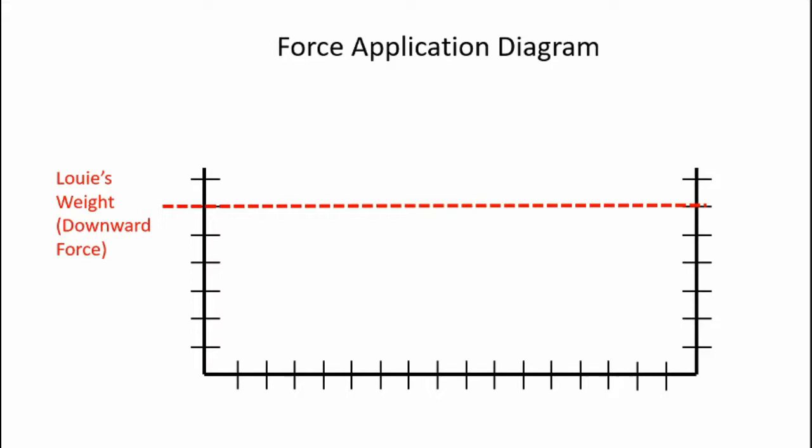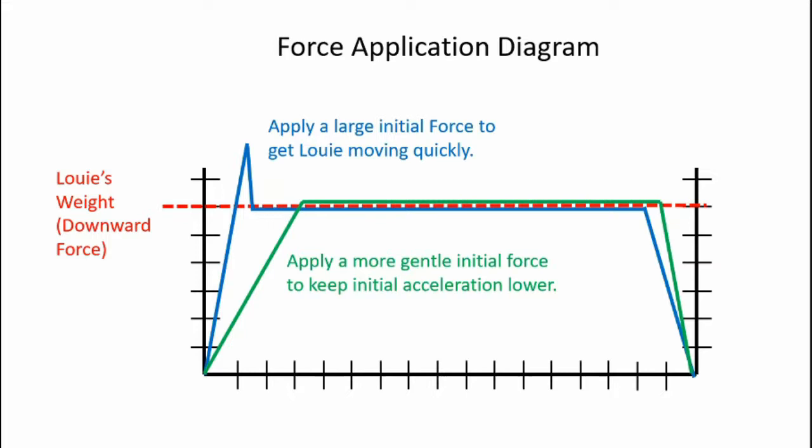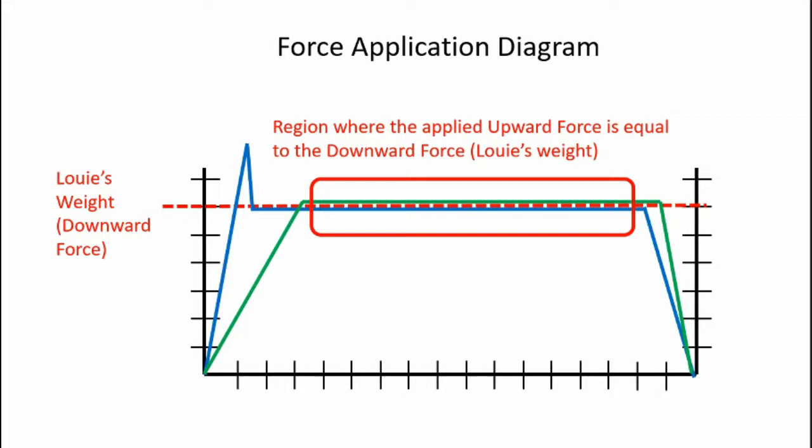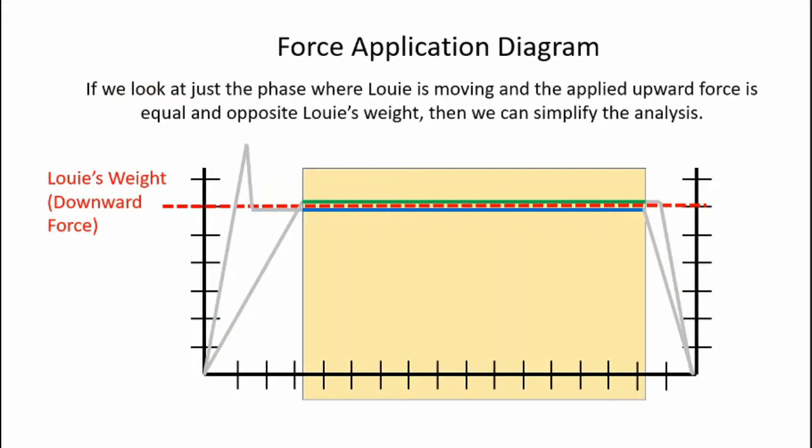So here's the force application diagram. We have Louie's weight with a red dashed line. Now we can apply a force that's greater than his weight initially and accelerate him quickly and then back off to a force that's equal to his weight. Or we can take a more gentle approach and slowly increase the lifting force until it equals his weight. Now the area of interest is where the force is equal to his weight. In these two cases, it's difficult to analyze the beginning forces involved. It's also a little difficult to analyze the closing forces that are involved. So we'll ignore those and just focus on the area where Louie's weight is equal to the force I apply with my hand. So he's moving upward with zero acceleration or at a constant rate.